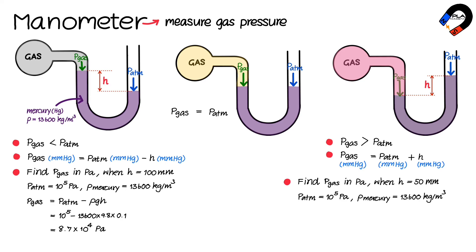The gas pressure equals atmospheric pressure plus ρgh. Substituting the values: atmospheric pressure = 10⁵, ρ = 13,600,